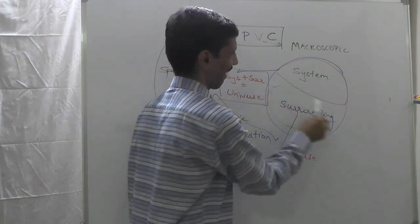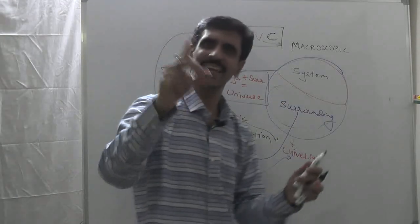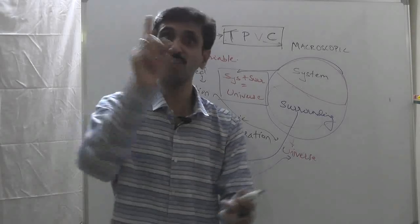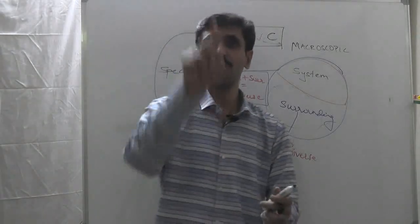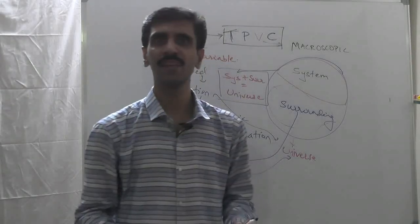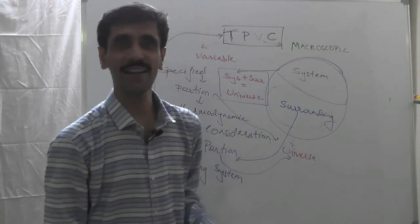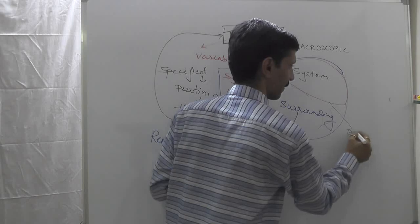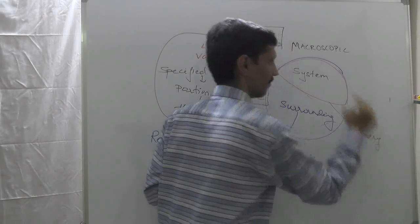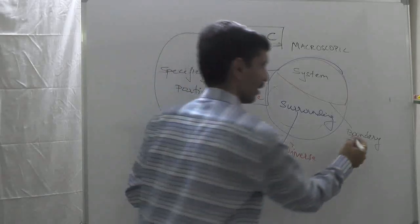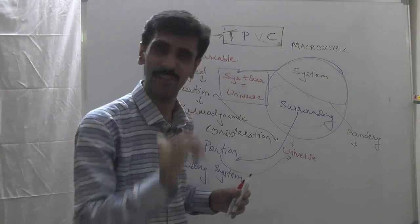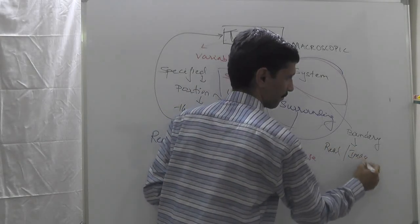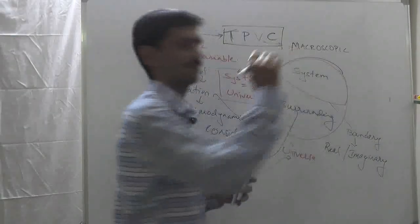Now, if we look at this red line — if this red line were not there, we could not differentiate between system and surrounding. So this red line is very important; it is responsible for differentiating the system from the surrounding, and that is called a boundary. This boundary is basically a line, but its characteristic is that it can be either real or imaginary.